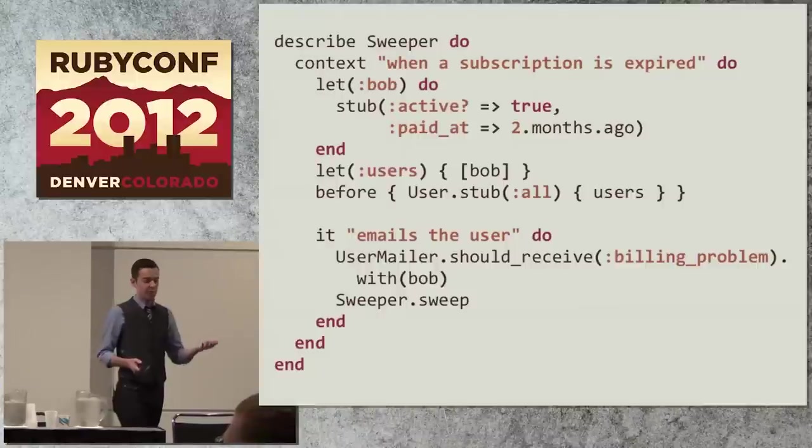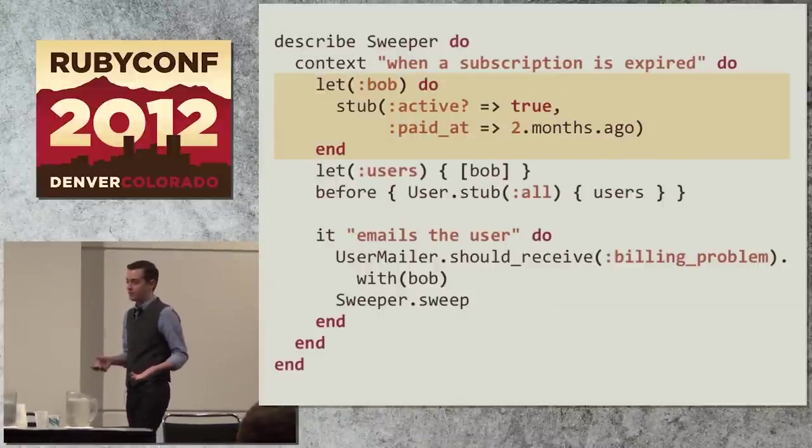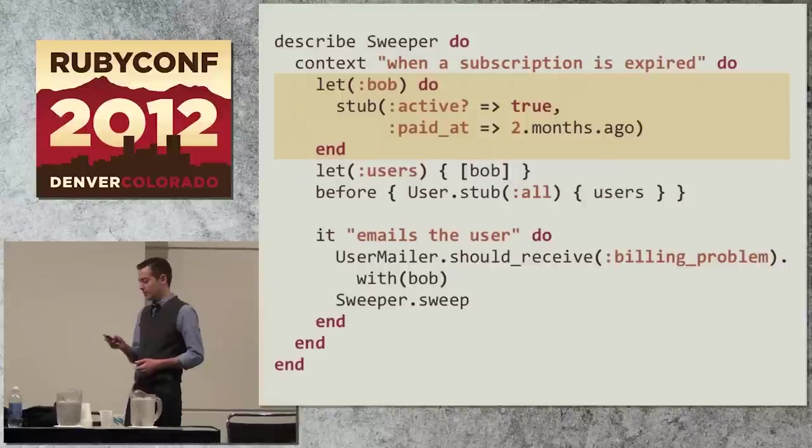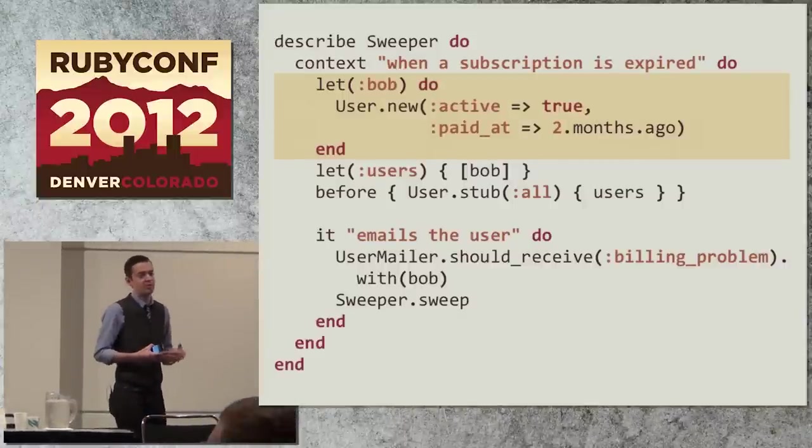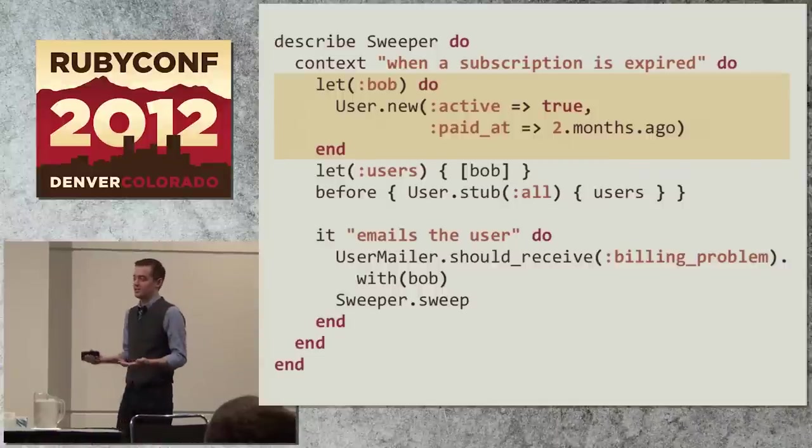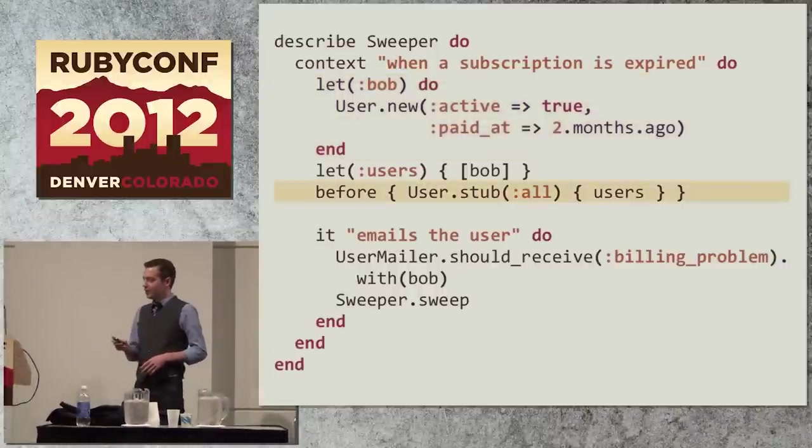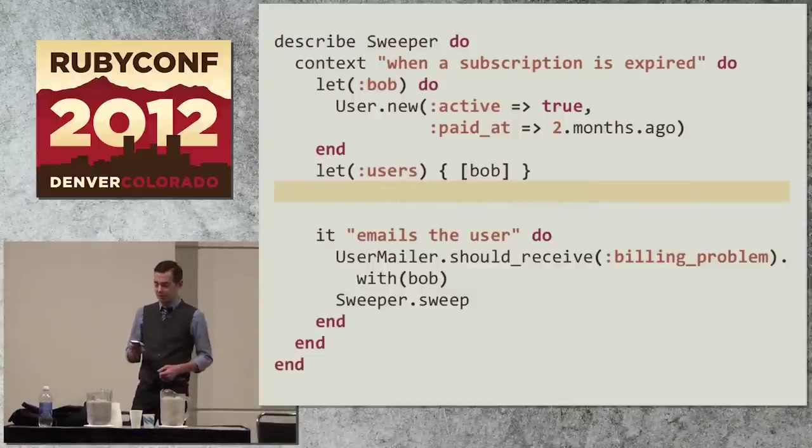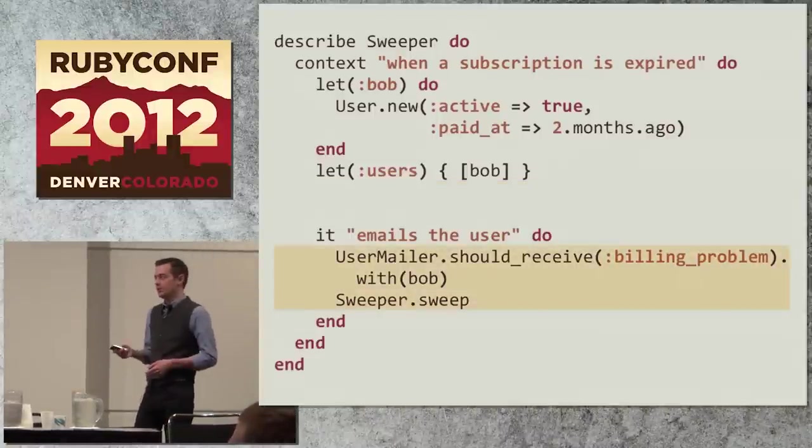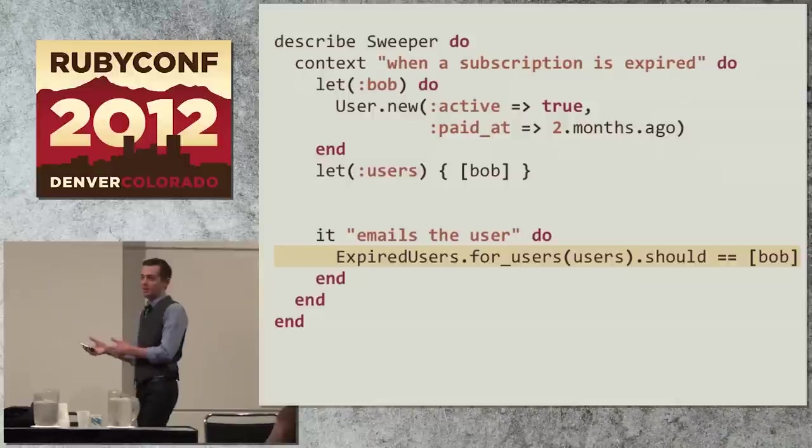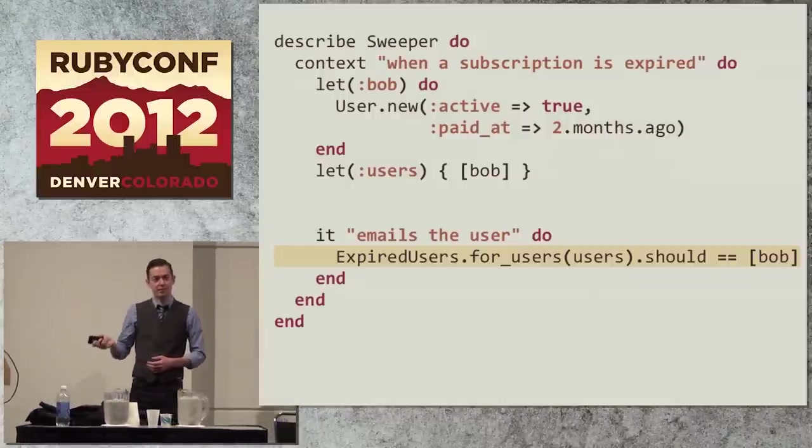So how could we apply that to more complex code that we work with all the time, stuff like the sweeper? Let's go through this and just impose both of these constraints and see what happens. Starting with the bob stub, we can't use a stub because we're not faking out any boundaries. So let's replace that with a user object, but not like an active record object, but like just a struct, a piece of data, even a hash. We can't do the user.all stub because we're not allowed to, so we'll just delete that. And then the actual body of the test, instead of doing a mock expectation, we can just call the method and get back the array of users who are expired.